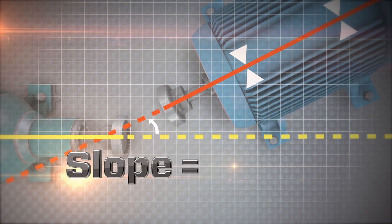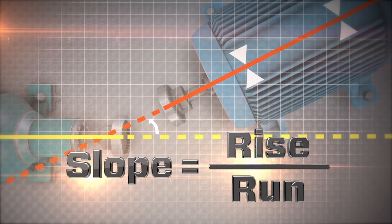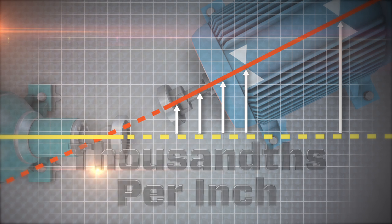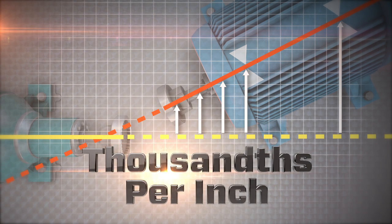Typically, this rate of change in offset is expressed in thousandths per inch. Let's look at that pitch of a roof again. Its rise is usually 2, 4, 6, or 8 for every 12 inches of run.